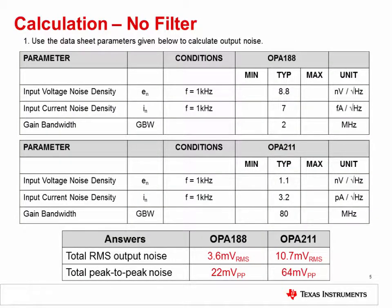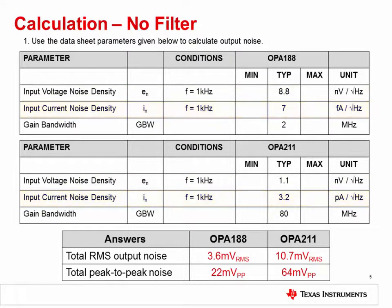In order to perform the noise calculations, you need to know certain parameters of each op amp. The key parameters are the op amp Gain Bandwidth Product, or GBW, Input Voltage Noise Density, or E sub n, and Input Current Noise Density, or I sub n. This slide gives a table of these key specs for both the OPA188 and OPA211.